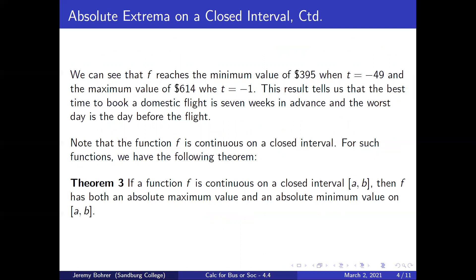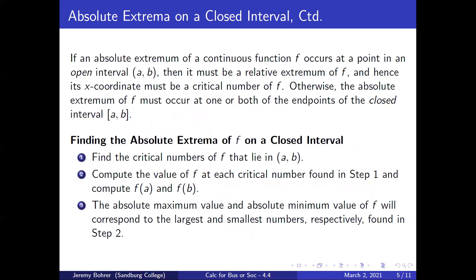Note that the function f is continuous on a closed interval. For such functions, we have the following theorem: if a function f is continuous on a closed interval [a, b], then f has both an absolute maximum value and an absolute minimum value. If the absolute extremum of a continuous function f occurs at a point in the open interval (a, b), then it must be a relative extremum of f, and hence its x-coordinate must be a critical number of f. Otherwise, the absolute extremum of f must occur at one or both of the endpoints of the closed interval [a, b].